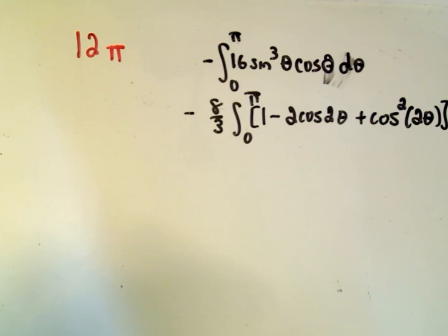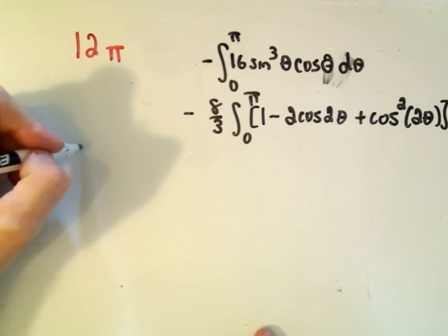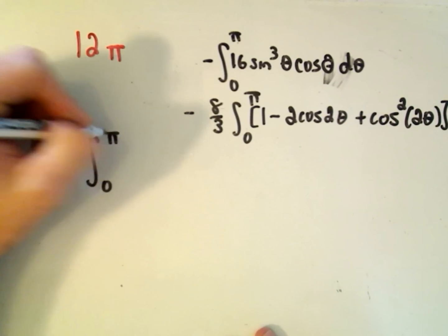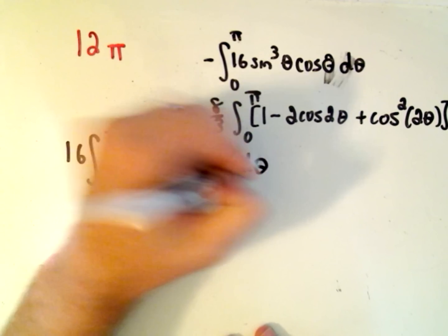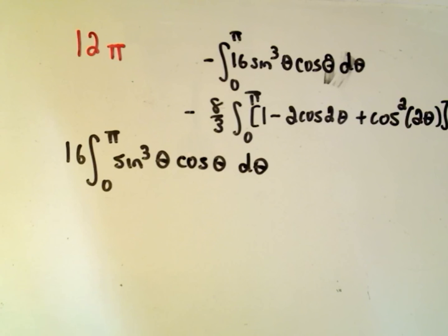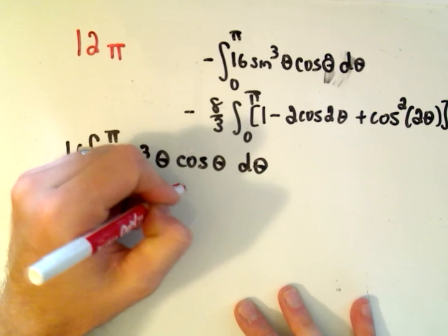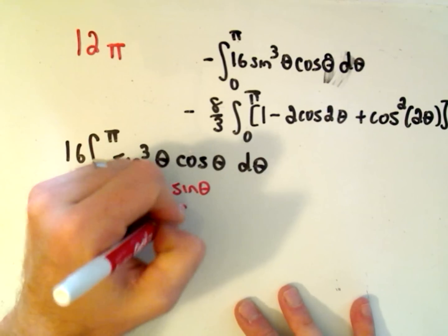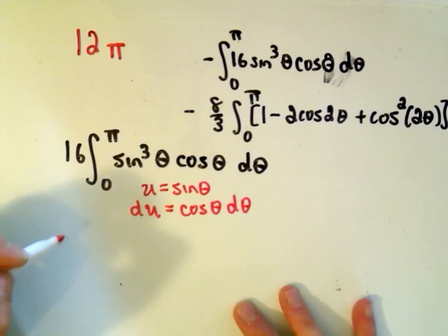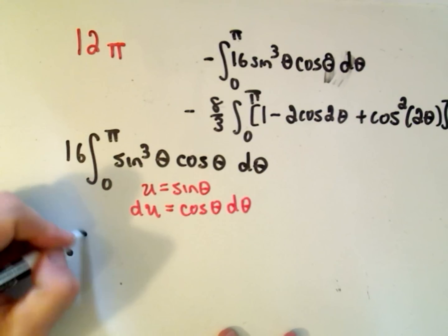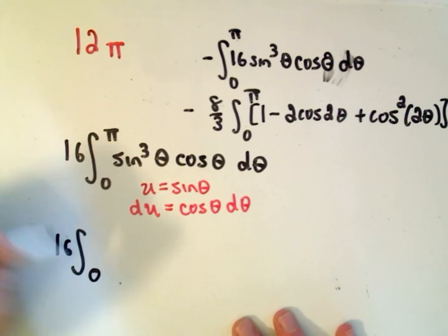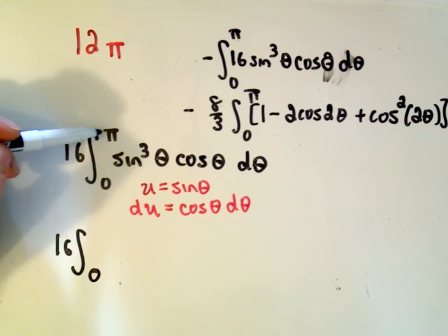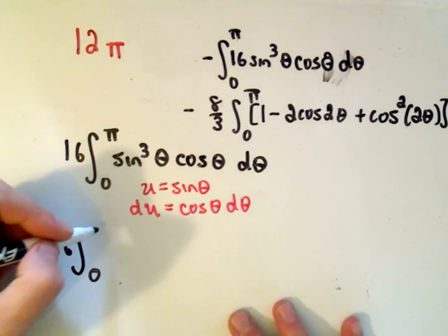Now let's integrate the second integral. So if we integrate 16 from 0 to π, the sin³θcosθ dθ part. Okay, what we would have to do on that part is I would let u equal sinθ. du then would equal cosθ dθ. So we'll get, this will turn into the integral 16. If we figure out our new limits of integration. So if I plug in θ equals 0, we'll get sin(0), which is 0. If we plug in π, we also get that sin(π) is going to be 0.